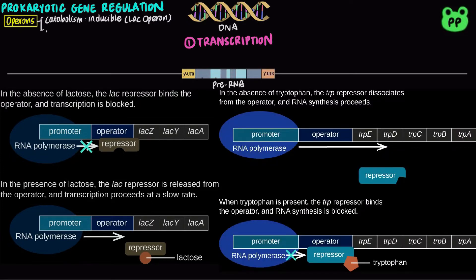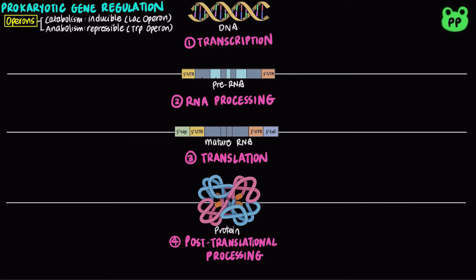On the other hand, anabolic or biosynthetic operons are typically repressible, which means that the genes are on by default and they are only repressed in the presence of the products. An example would be the trp operon, which functions in tryptophan biosynthesis.